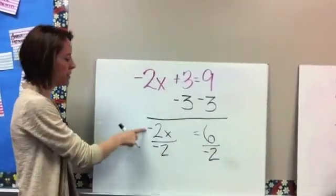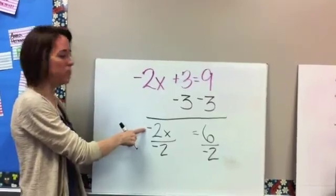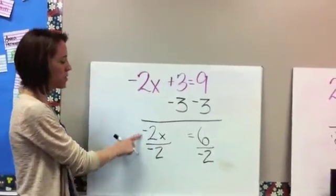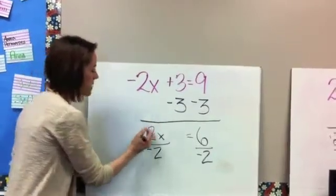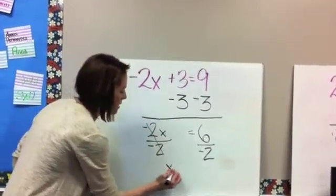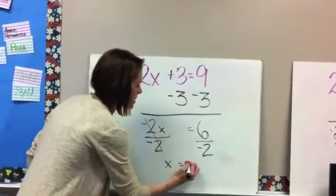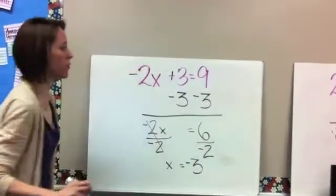Okay, remember, you have to divide it by the same number. You have to include that sign, because if you don't, then you're going to end up with a negative variable. You have to cancel this out to equal a positive 1. So these cancel out, and you're left with x. And then 6 divided by negative 2 is negative 3.